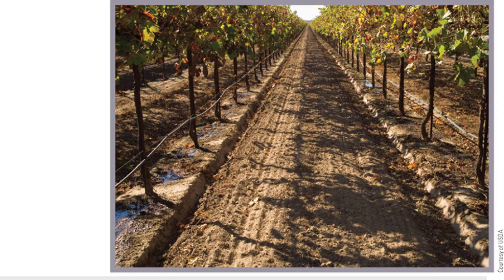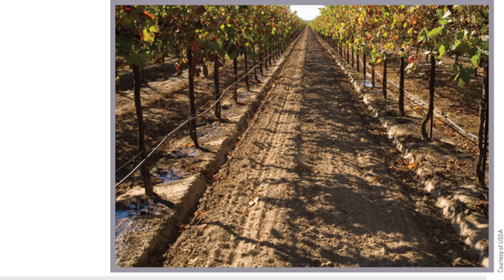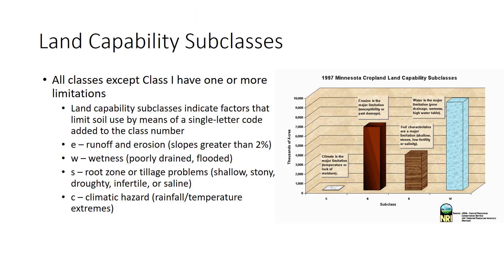This vineyard in California exemplifies class 1 land: level land free of hazard of erosion and suitable for all uses. While vineyards are generally clean cultivated, leaving soil bare is damaging to soil quality. This vineyard is drip irrigated. All classes except class 1 have one or more limitations. Land Capability subclasses indicate factors that limit soil use by means of a single-letter code added to the class number. A class 2E soil, for instance, is slightly limited by erosion hazards.